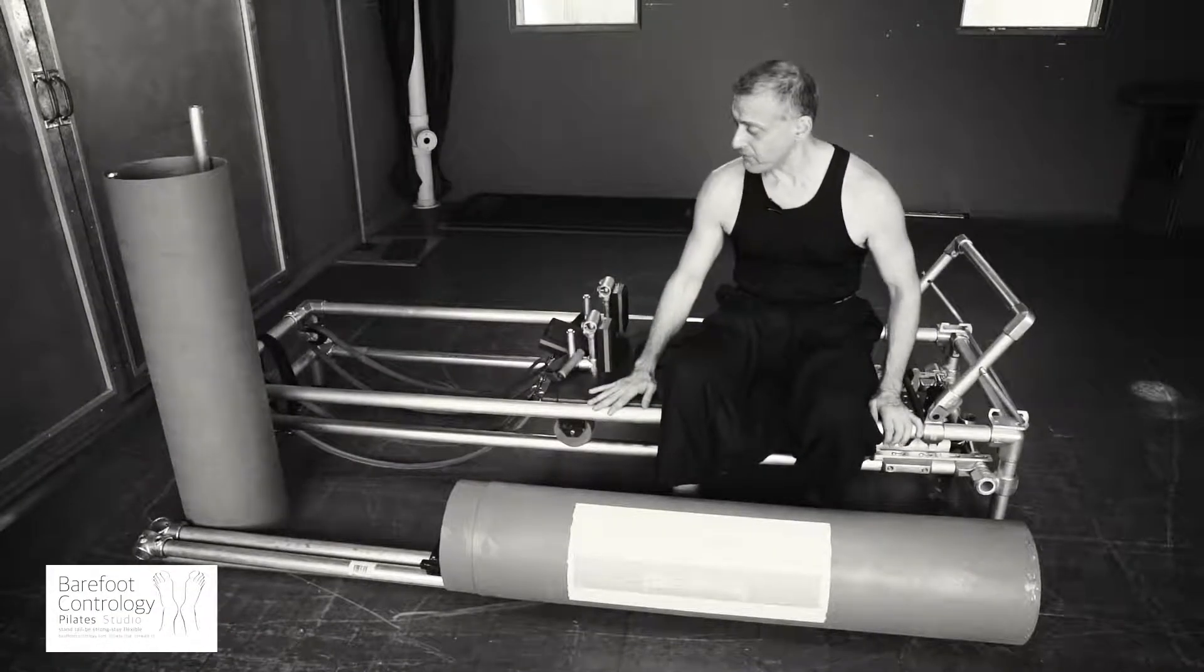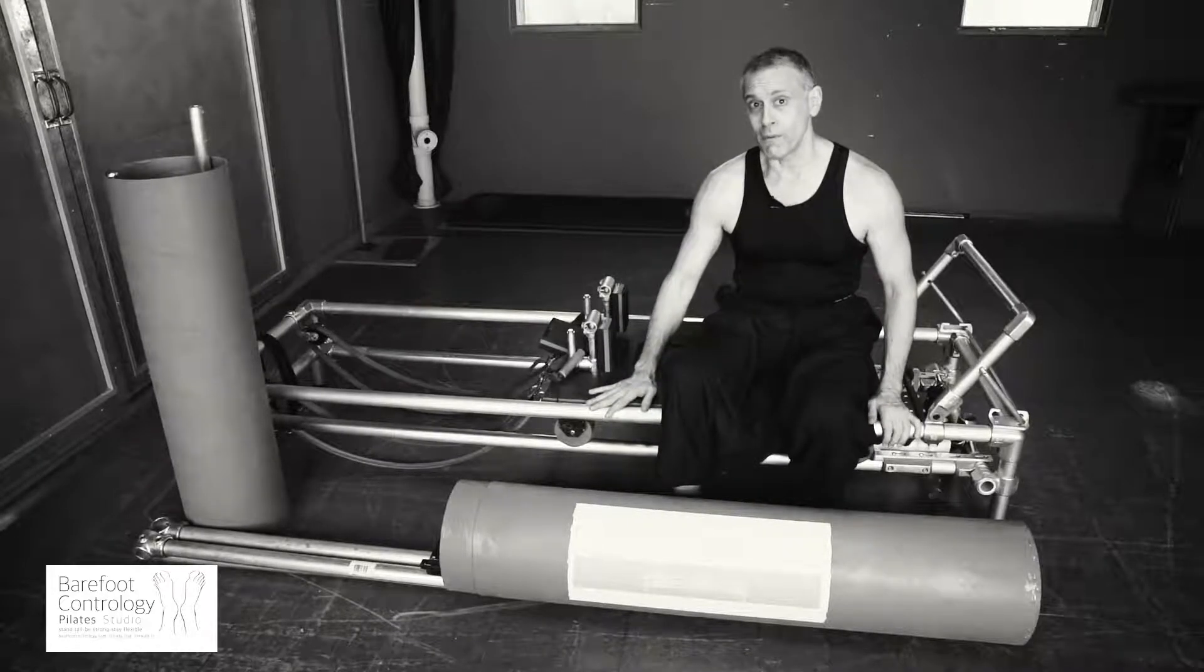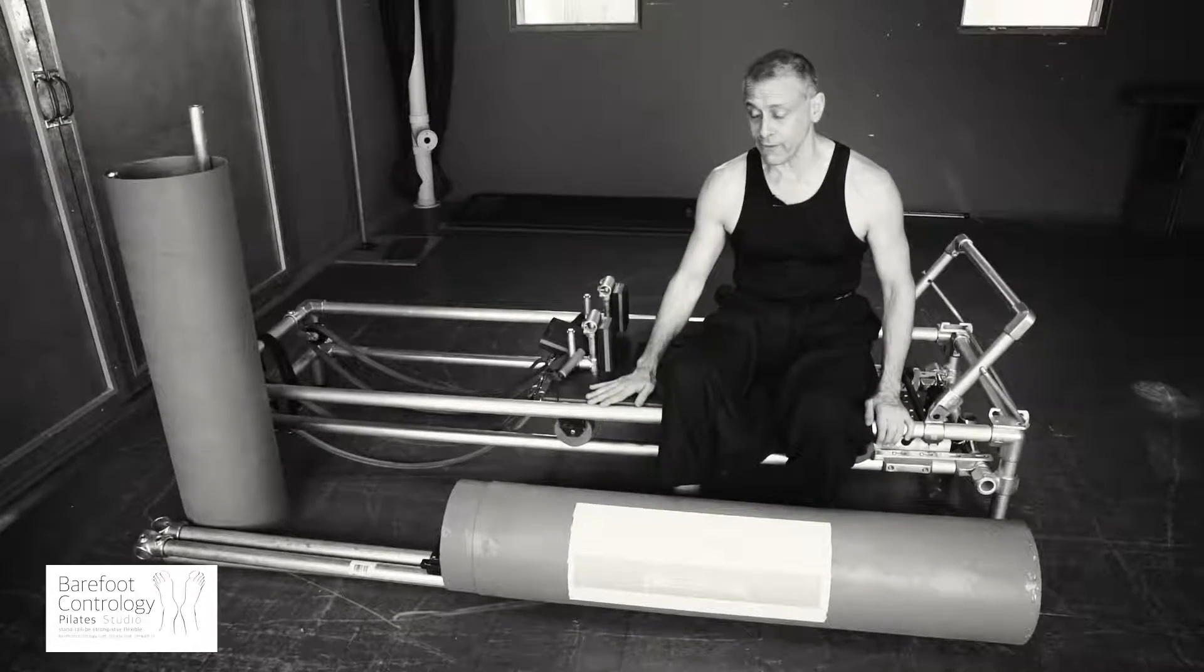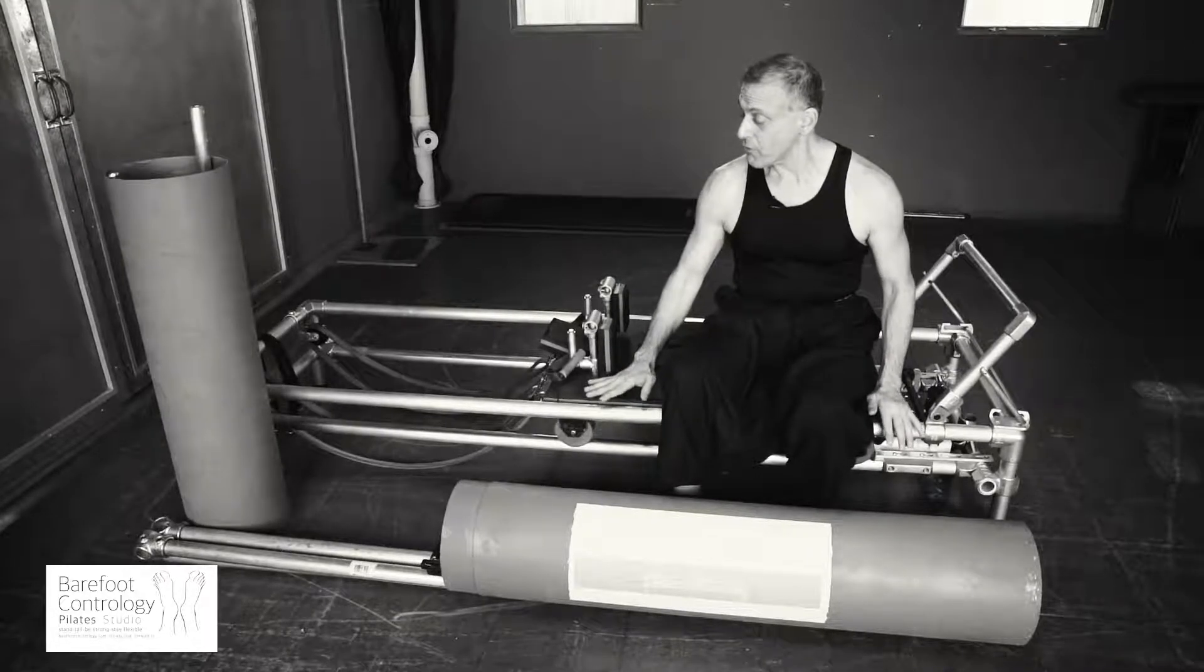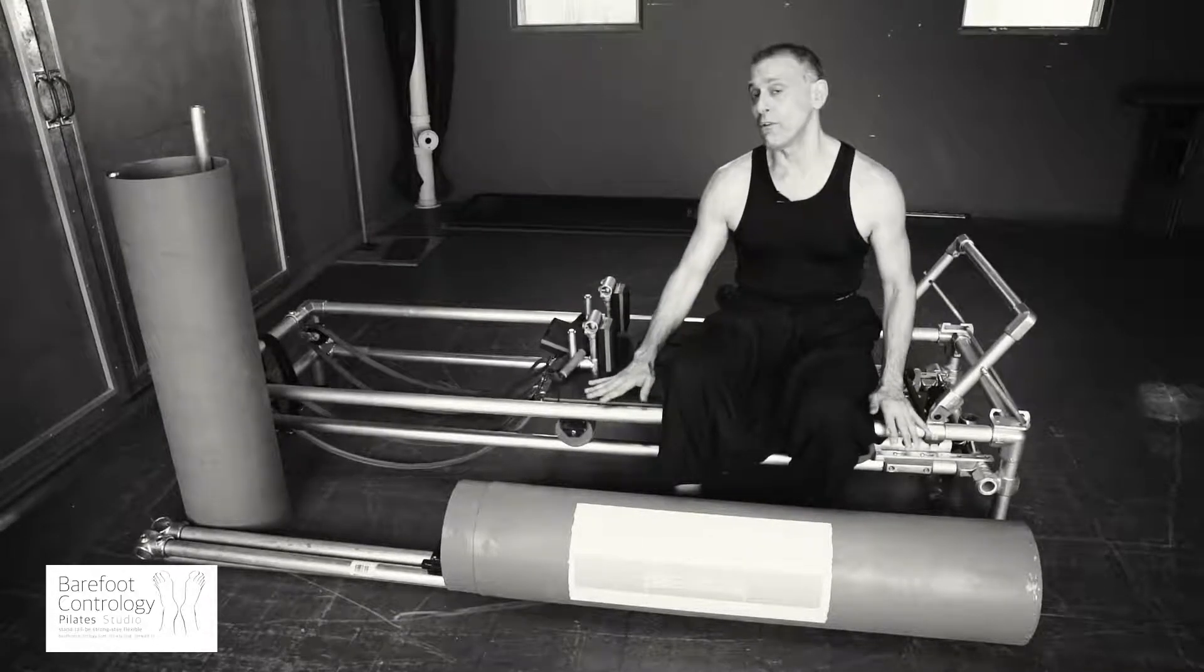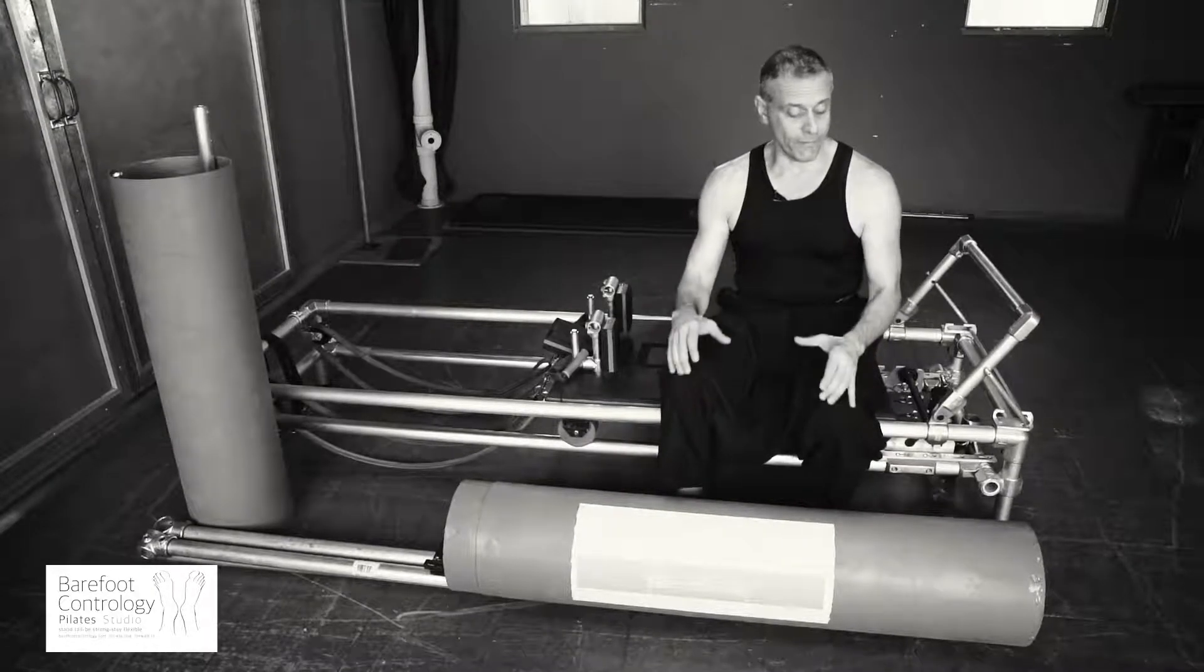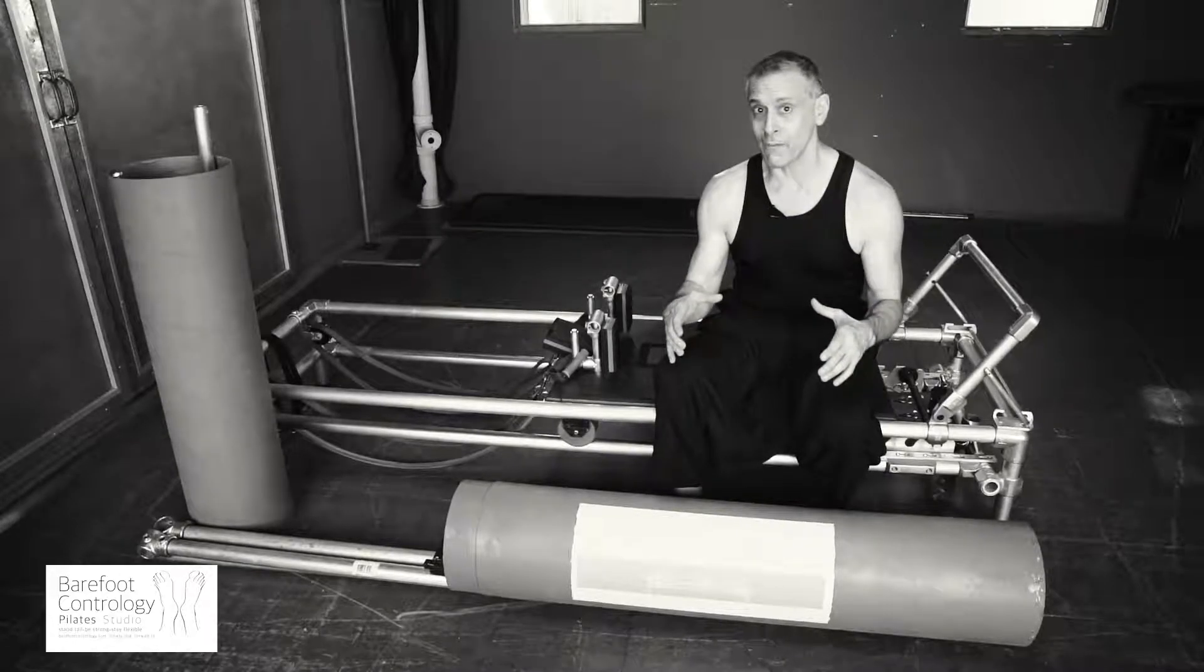What you see here, that I'm sitting on, is a Reformer that is of conventional, traditional dimensions. But because it's all made out of pipe and tube and fittings, it all breaks down into one tube that's just about 10 inches in diameter.